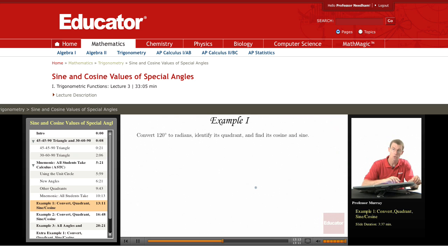First example here is 120 degrees. We want to convert that to radians, identify its quadrant, and find its cosine and sine.